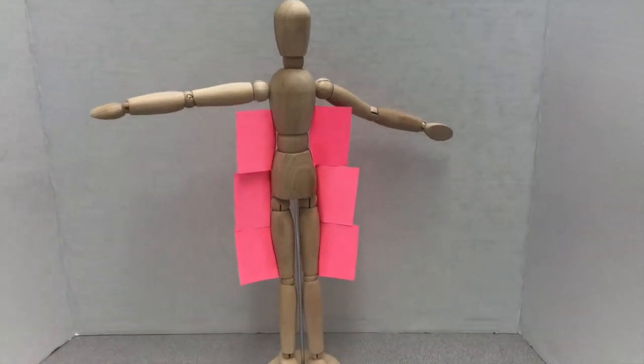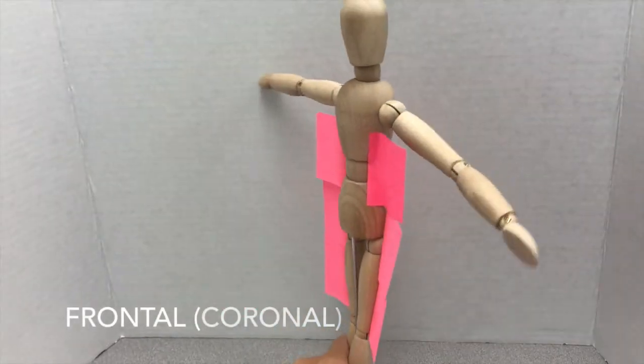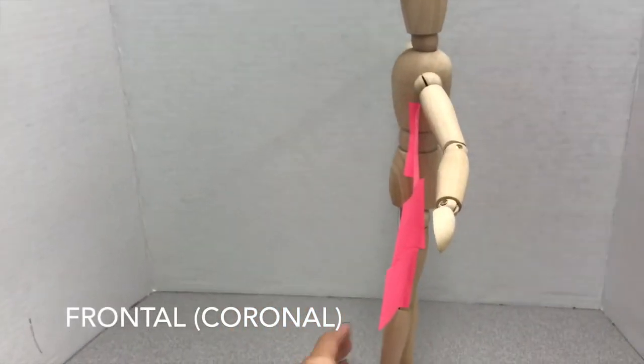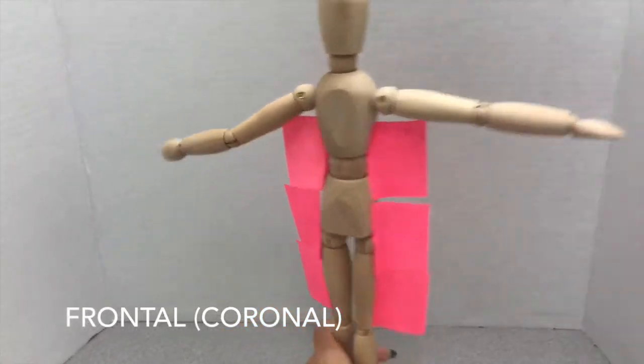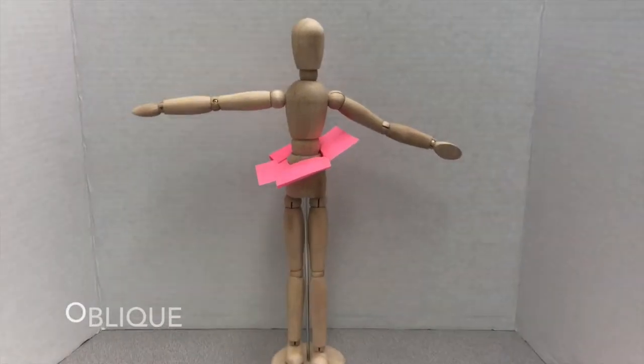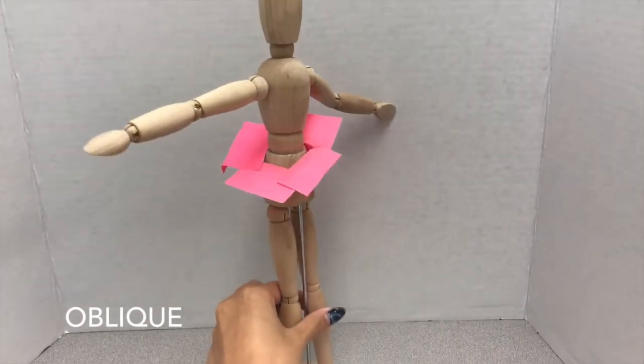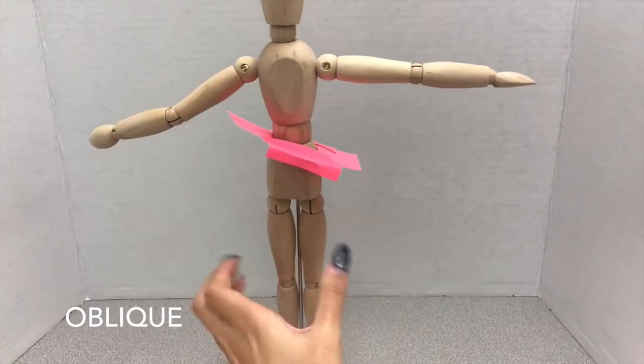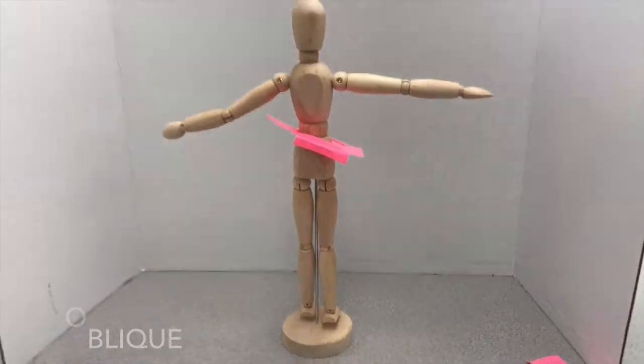And then we have frontal or coronal, which is dividing the body into front and back. And then we have oblique plane, which is also dividing into up and down, but at an angle.